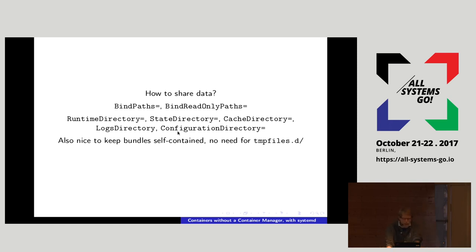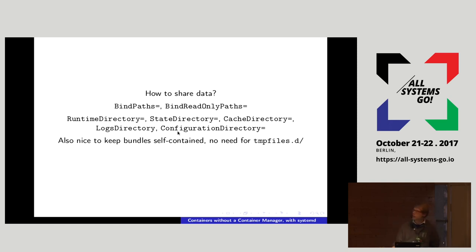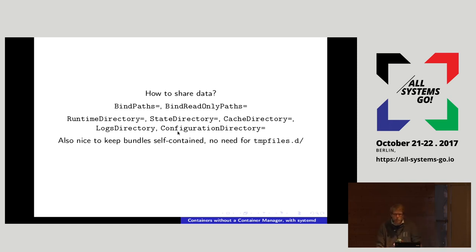These things are nice because they keep bundles self-contained. Traditionally if you install a Unix service it creates directories all over the file system hierarchy, but with the bundling concept you don't need to do that if all you want is a runtime directory, state directory, cache directory, logs directory, or configuration directory. To be specific: RuntimeDirectory is under /run, StateDirectory under /var/lib, CacheDirectory under /var/cache, LogsDirectory under /var/log, and ConfigurationDirectory is a subdirectory of /etc.